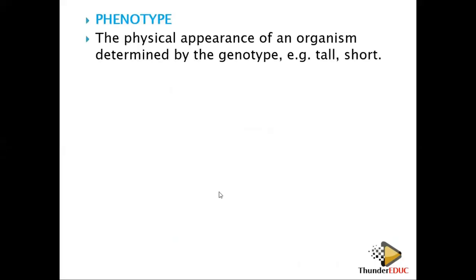Phenotype is the physical appearance of an organism — expressing an individual in terms of what you can see. In a cross question, they will usually ask you the phenotype first. Physical appearance is determined by the genotype. For example, tall or short, light-skinned or dark-skinned — these are phenotypes you can observe directly.